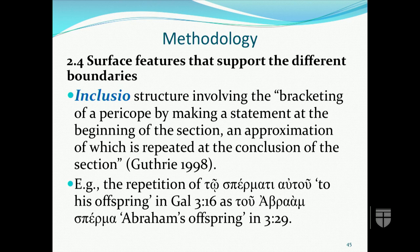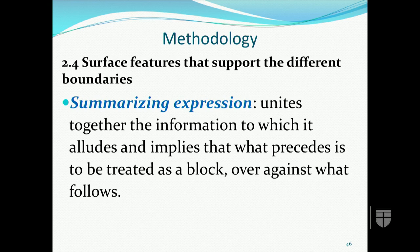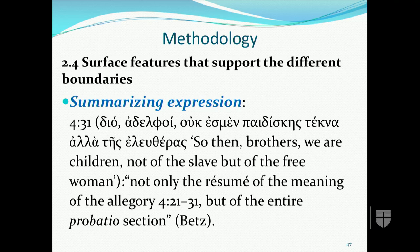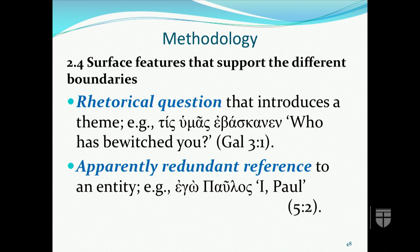An inclusio structure, according to Guthrie, involves bracketing a pericope by making a statement at the beginning of the section an approximation of which is repeated at the conclusion. Summarizing expressions unite together the information to which they allude, implying that the preceding material is to be treated as a block over against what follows — as we see in 4:31 with the summarizing expression that Betz says is not only the résumé of the meaning of the allegory of 4:21-31 but of the entire probatio section.